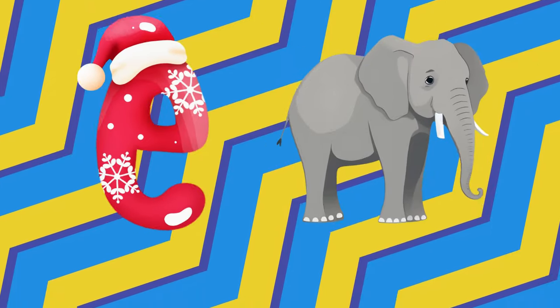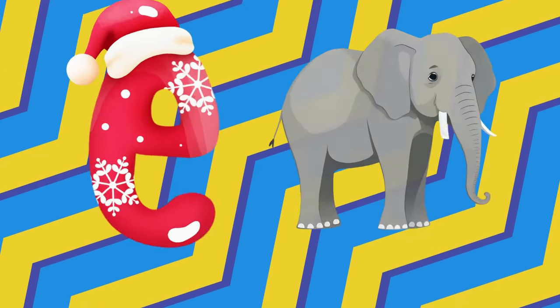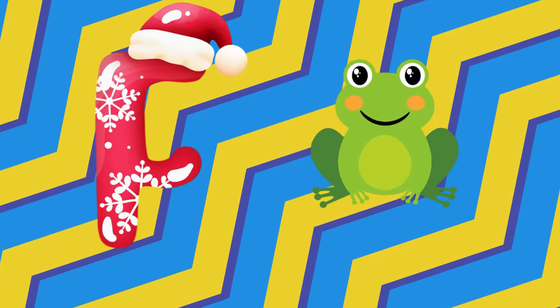E is for elephant, e-e-elephant. F is for frog, f-f-frog.